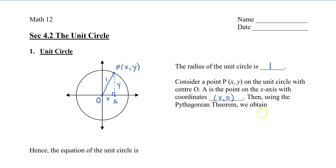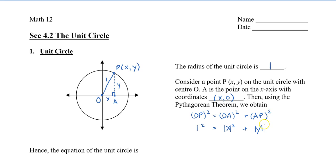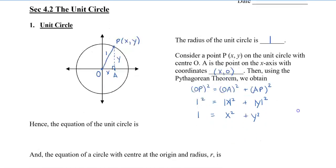Using the Pythagorean Theorem, we obtain that OP squared equals OA squared plus AP squared. Substituting the values in, we have 1 squared equals x squared plus y squared. I'm going to put these in absolute values because when we square them it's going to become positive. This point P could be in the other quadrants as well. Simplifying, we get 1 equals x squared plus y squared, which is actually the equation of the unit circle, obtained from Pythagoras.